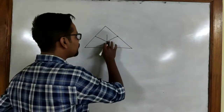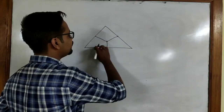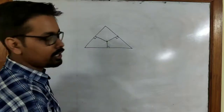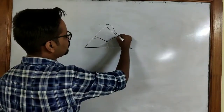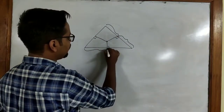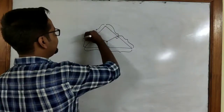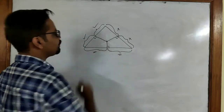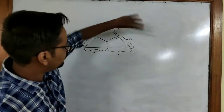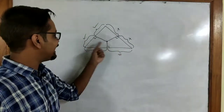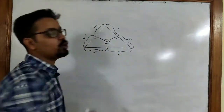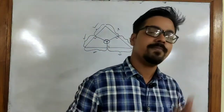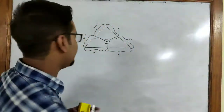All three perpendicular bisectors of the three sides of a triangle — these must be perpendicular, and the two parts on each side must be equal. All these angles should be 90 degrees. So they must meet at a common point, which means they are concurrent. That is the first theorem. We will now try to prove this theorem.